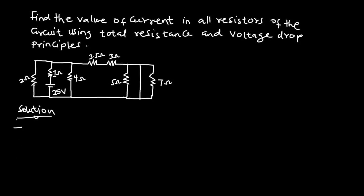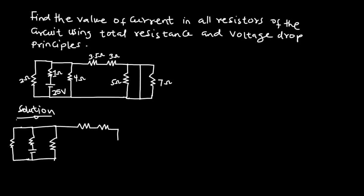I'm going to redraw the circuit. So this will be the new circuit: I have the 3-ohm, the 3.5-ohm, the 4-ohm, the 1-ohm, and the 2-ohm resistors, and then the 25-volt voltage source. This is the circuit now.